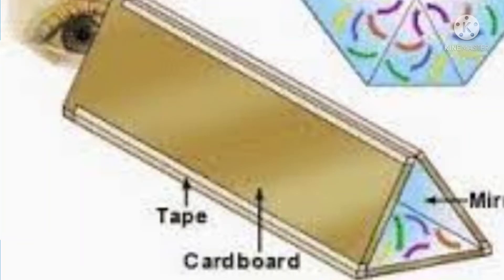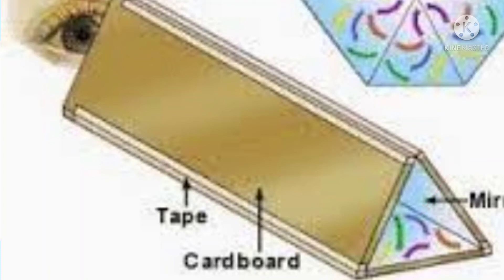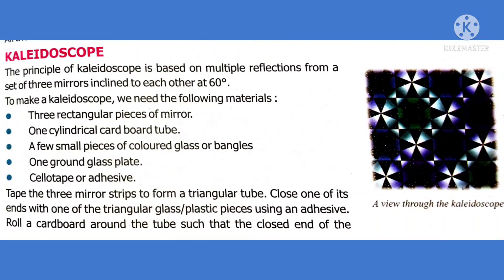A kaleidoscope works on the principle of multiple reflection, in which three rectangular pieces of mirror are inclined to each other at a 60-degree angle, producing different images of an object. The objects inside are small pieces of colored glass or bangles. With such a kaleidoscope, we can see different beautiful patterns, because of multiple image formation due to three mirrors inclined at 60 degrees.